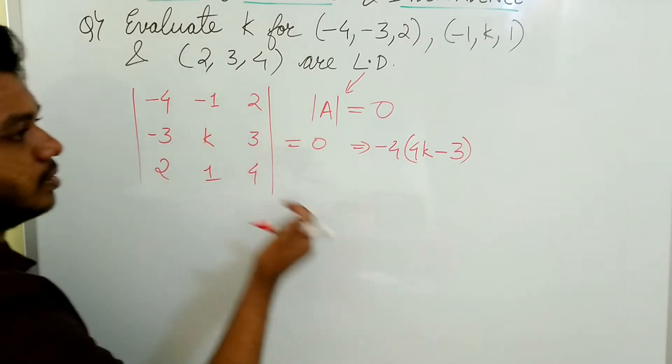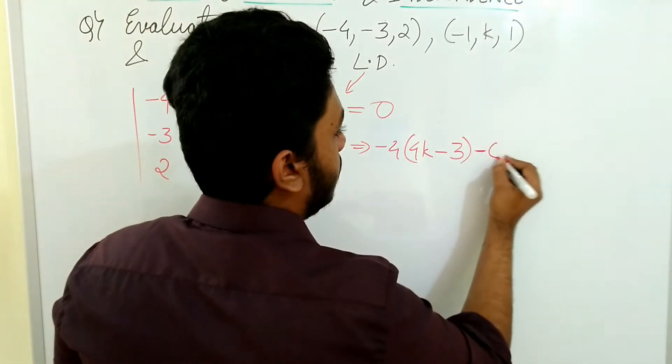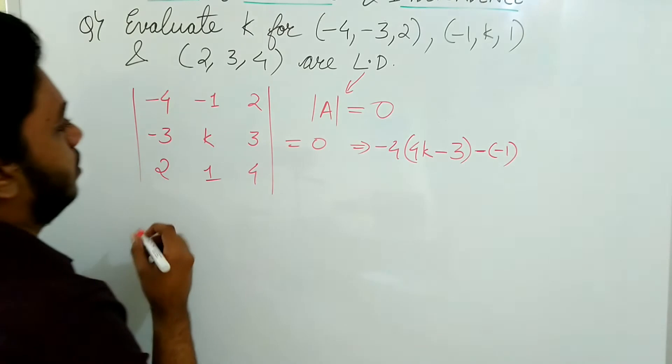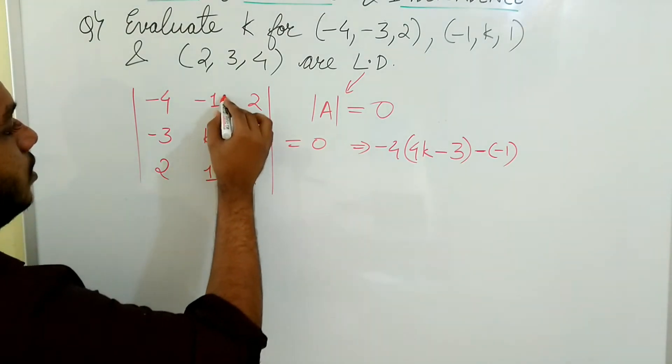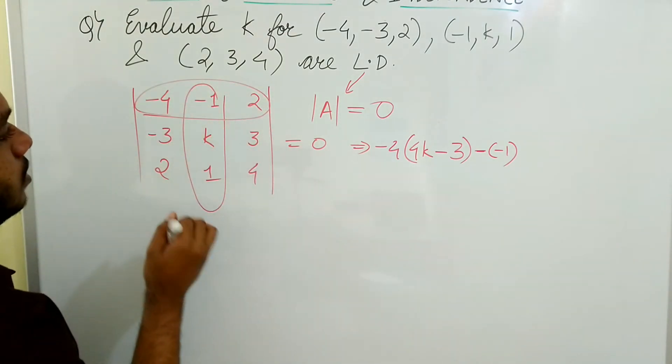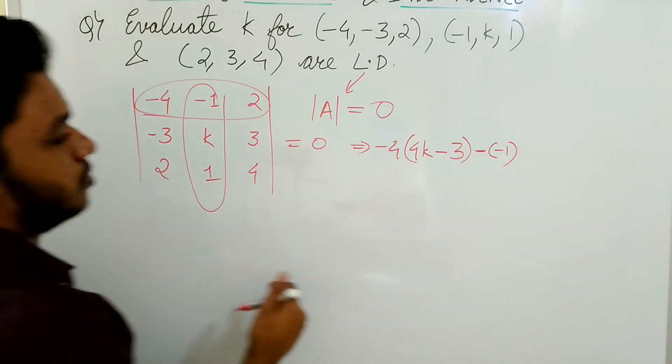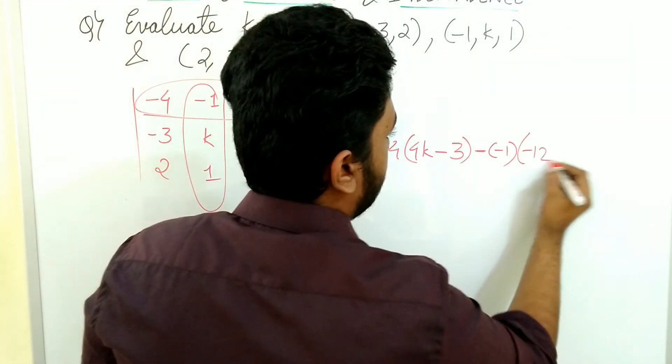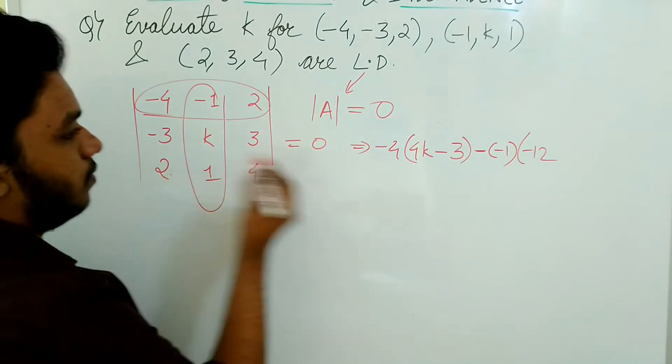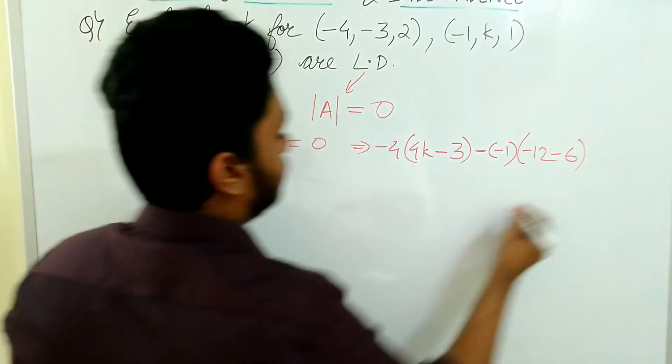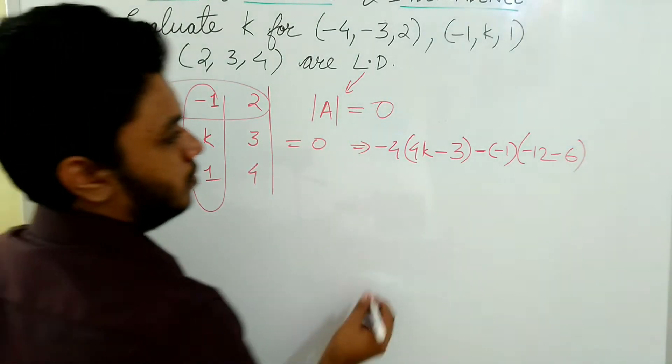Minus of minus 1. Here, minus sign will be there, and one more minus. This row we need to cancel out. So I will be getting -3 into -12, minus 6.